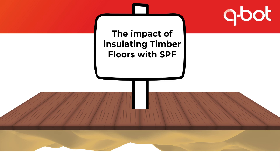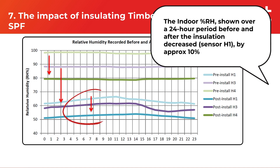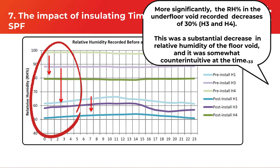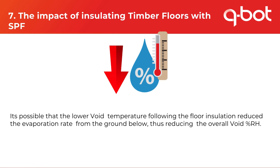In 2016, the National Energy Action did a 10-home study looking at humidity both within the house and the void in properties with QBOT closed cell spray foam insulation. In a terraced house in northwest London, both indoor and void relative humidity data were collected. A 10% humidity drop was seen in many rooms. More significantly, the floor void sensors recorded decreases in relative humidity of up to 30% post-installation. The lower void temperature following floor insulation reduced the evaporation rate from the ground below, reducing the overall void relative humidity.